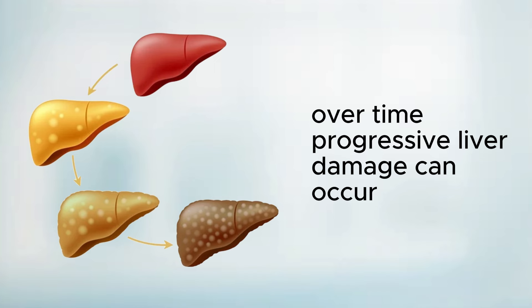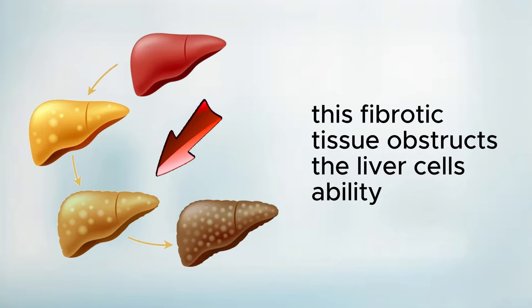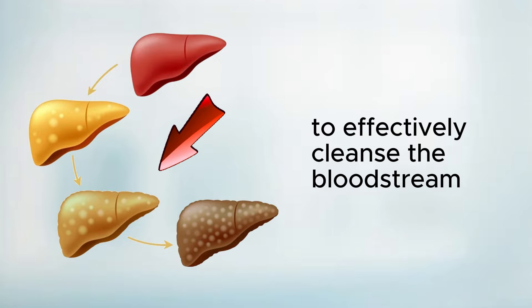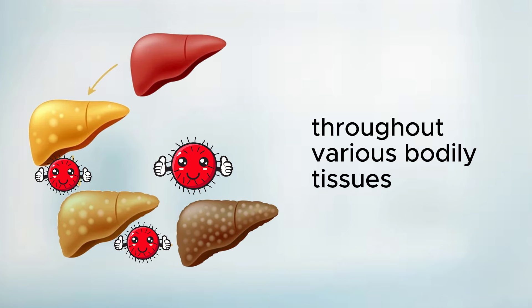Over time, progressive liver damage can occur, characterized by the formation of scar tissue known as fibrosis. This fibrotic tissue obstructs the liver cell's ability to effectively cleanse the bloodstream, resulting in the accumulation of toxins throughout various bodily tissues.